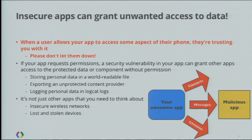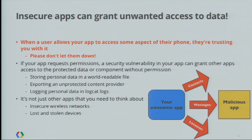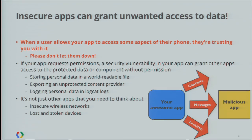Besides worrying about other malicious apps interacting with your apps, you need to watch what you do over the network. Sending unencrypted personal data over a wireless network is really bad, so you should be using encryption whenever possible. If you're transmitting data over an unencrypted link, you might as well be broadcasting it to the world — imagine your users walking around with a billboard floating over their head showing all of their personal information and the contents of their documents or even their contacts' personal information. You need to encrypt anything that goes over a wireless network.